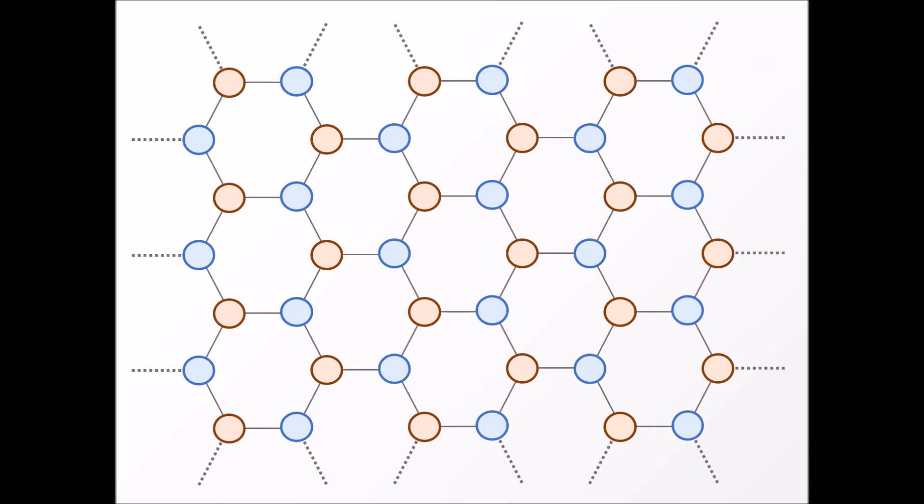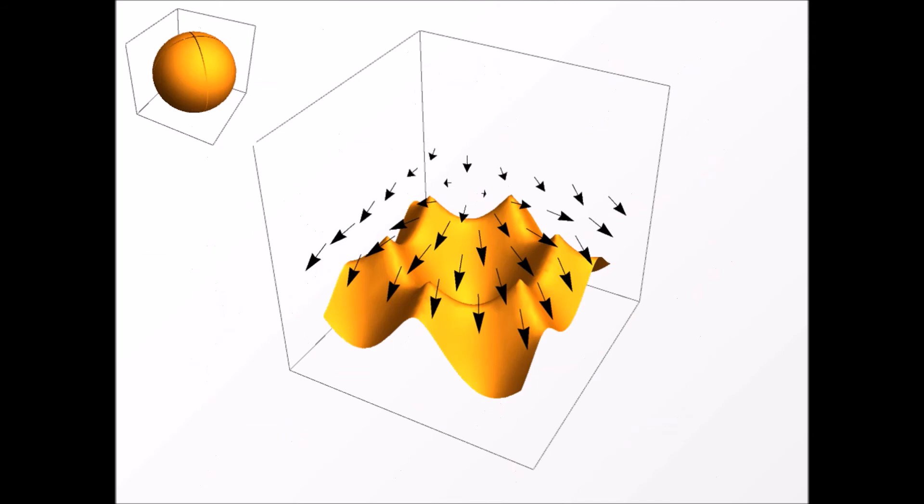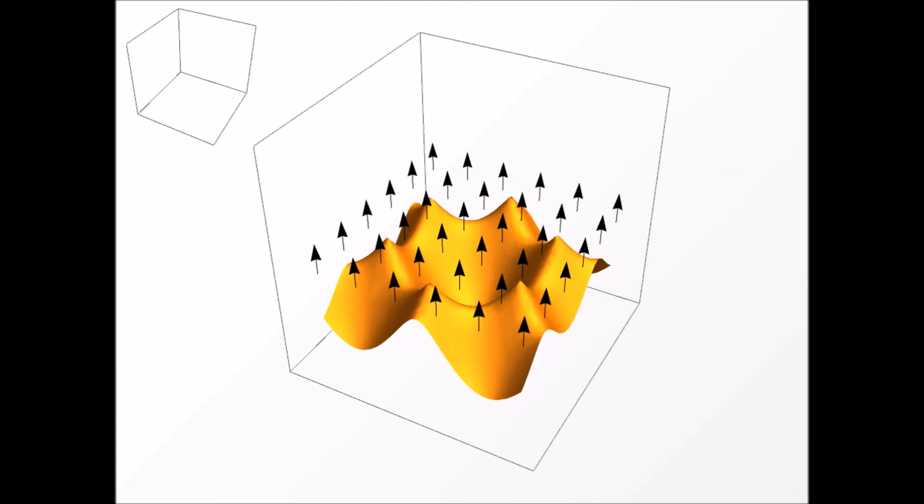Let us now turn on the interactions between fermions residing at nearest neighboring sites. For moderate values of the interactions, the winding number does not change. If we increase the strength of interactions, then the ground state vectors are all aligned along the given direction, thus giving a trivial winding number.